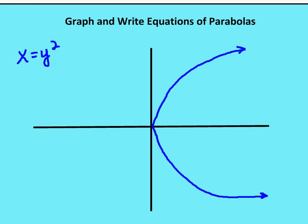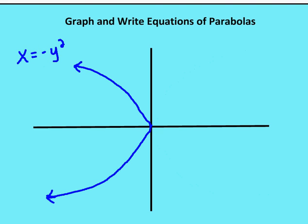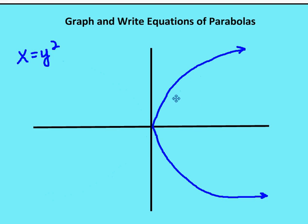Now if we switch the exponent so that x has the exponent of one and y has the exponent of two, the parabola opens to the right. And you can guess that in the case of x equals negative y squared, the parabola opens to the left. For whatever value of y we give, the x value is always going to be negative, and in the right-opening case the x value is always going to be positive.